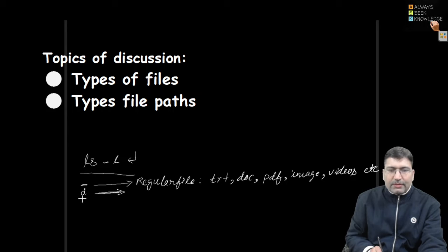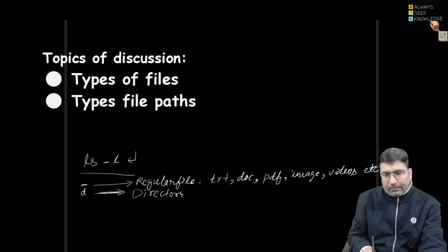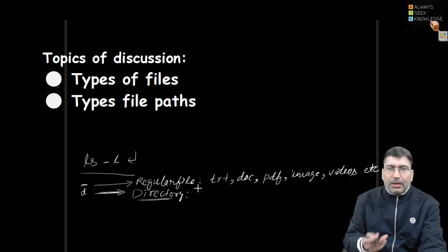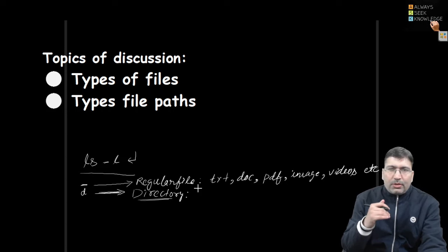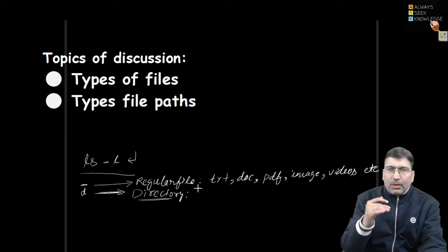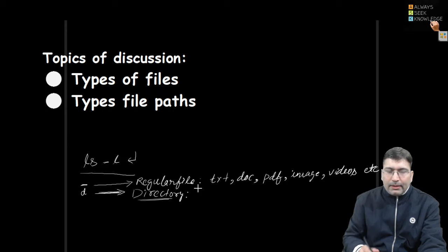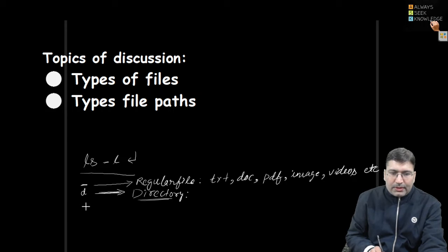The next category: if ls -l is displaying 'd' as the very first character, it reflects a directory. There are directory files — we have created them using the mkdir command. A directory is also a file, but it does not store the same kind of data as a regular file. A directory stores records or data about other files and directories, so in that way it is different from a regular file.